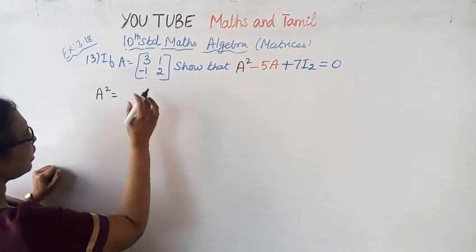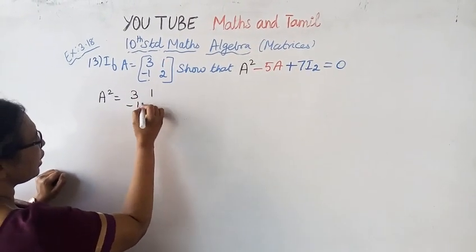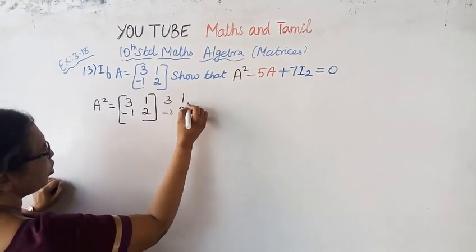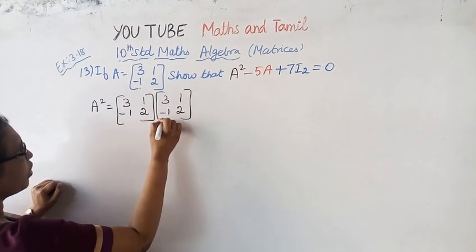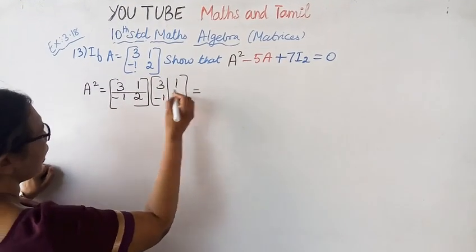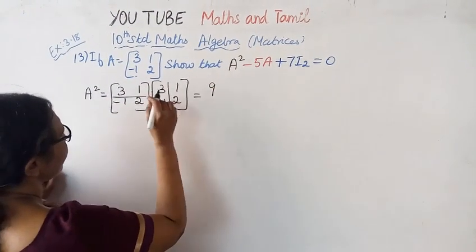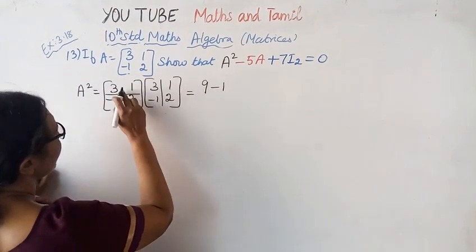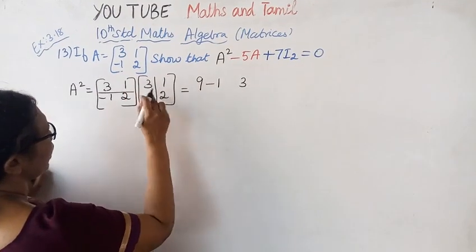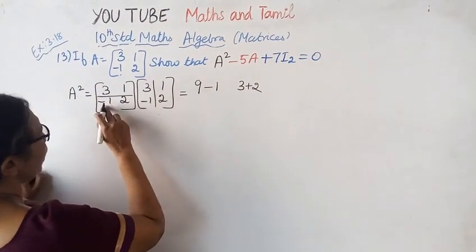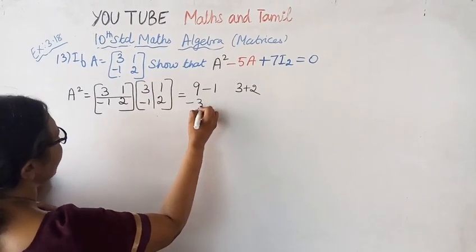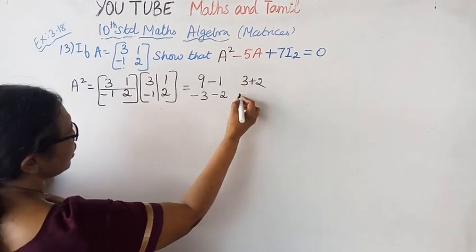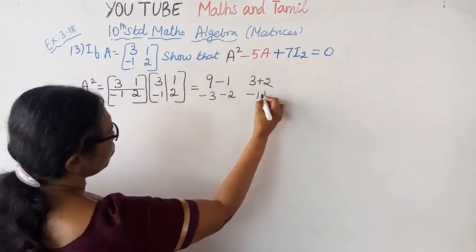A squared equals A times A. That is [[3, 1], [-1, 2]] multiplied by [[3, 1], [-1, 2]]. Computing row by column: 3×3 = 9, 1×(-1) = -1, so first entry is 8. 3×1 = 3, 1×2 = 2, so second entry is 5. (-1)×3 = -3, 2×(-1) = -2, so third entry is -5. (-1)×1 = -1, 2×2 = 4, so fourth entry is 3.